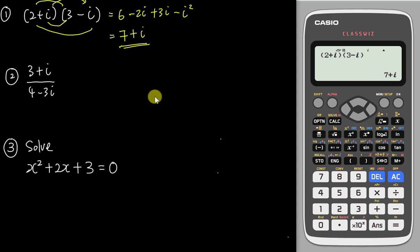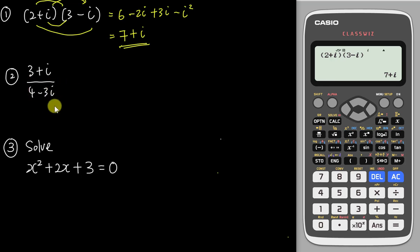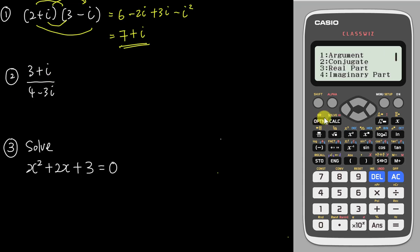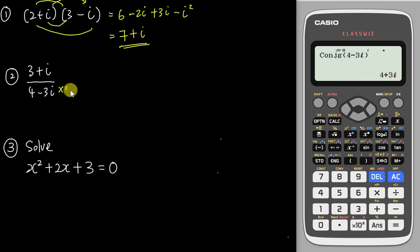For division problems, as I said, the denominator cannot have i, so you need to get rid of it. In the exam you need to know what to multiply. You need to multiply by the conjugate of the denominator. If you're not sure what the conjugate is, the good thing is this calculator has a conjugate function — it's option number two. For example, insert 4 minus 3i and find its conjugate, which is 4 plus 3i.